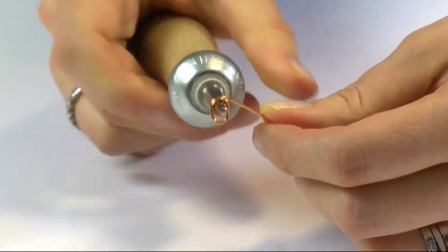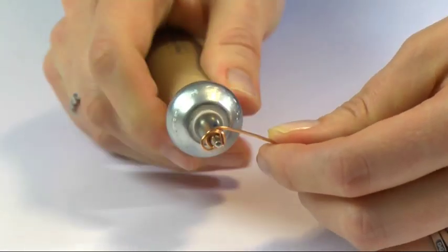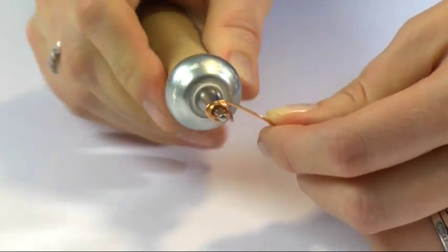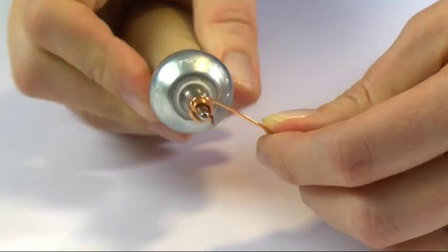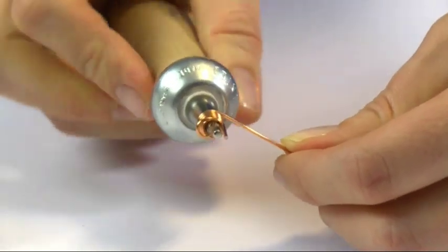Then just gently twist and guide your wire so that the coils sit nice and close together.